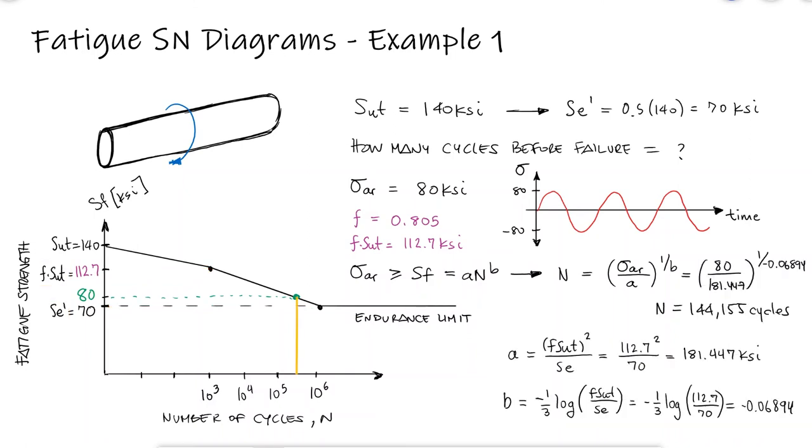The number of cycles for the fatigue strength to reach a value of 80 KSI and therefore make the part fail because that's the stress it is subjected to is therefore equal to 144,155 cycles.